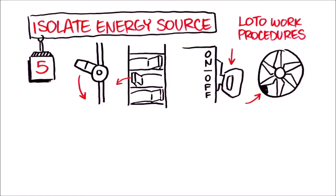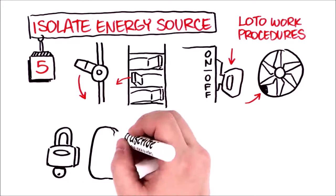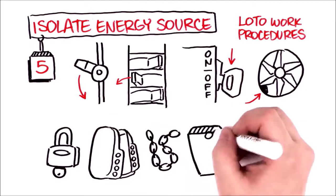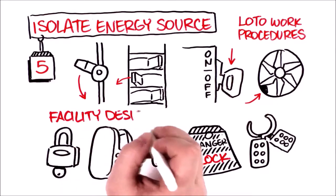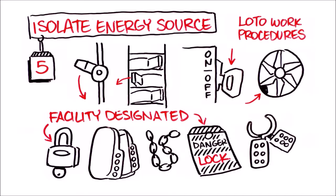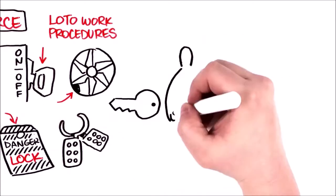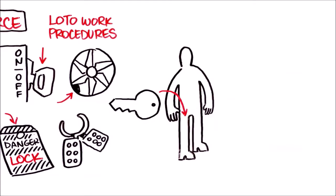Now you'll apply the appropriate lockout devices, such as locks, covers, chains, and identification tags, and the appropriate LOTO equipment. You must attach your facility's designated LOTO lock and tag to the equipment. Then make sure you place the key for that lock on your person.